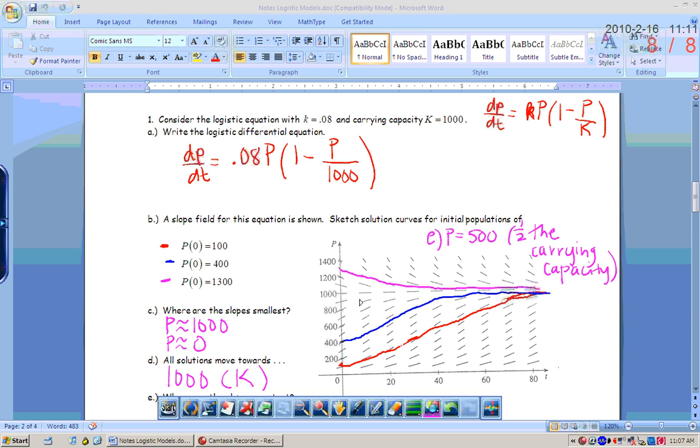Solution curves that start below p equals 1000, that would be the red one and the green one, will have inflection points where? Where will your inflection points occur if your population starts below your carrying capacity? Also at 500. What is an inflection point? It's where the second derivative is changing signs, or on the actual graph it's where the concavity is changing.